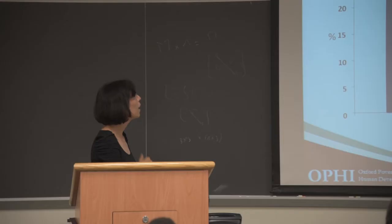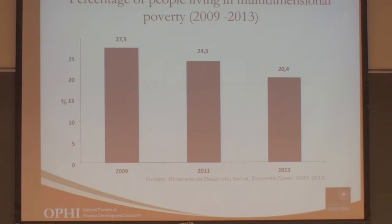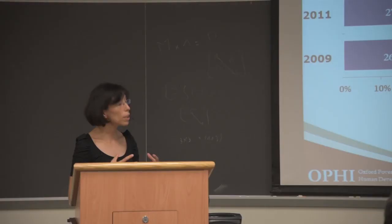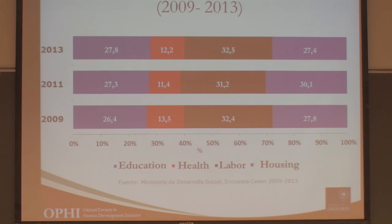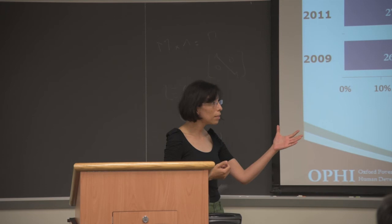There is a clear reduction in the percentage of people living in multidimensional poverty from about 27% to 20%, which is statistically significant. The dimensional breakdown shows which indicators — reported here by dimension — are contributing most to multidimensional poverty. Labour and social security contributes the most, at 32.4% in 2009 and still 32.5% in 2013. So despite a reduction in the number of poor people, the composition of poverty has not changed much in these two years — perhaps because some variables are stock variables that don't change quickly.